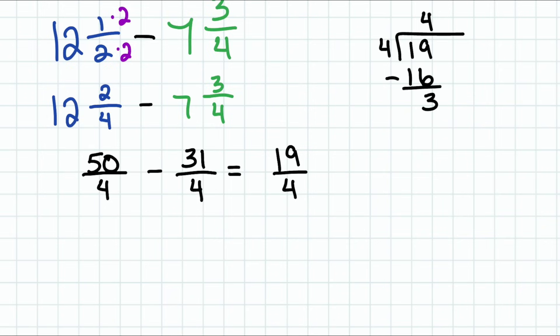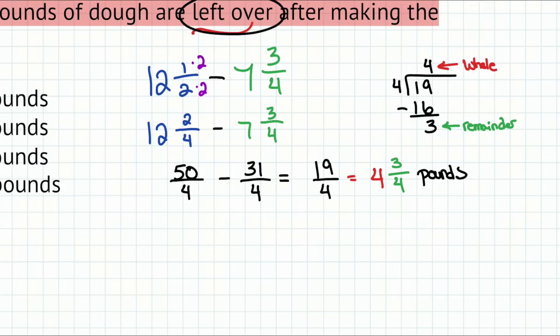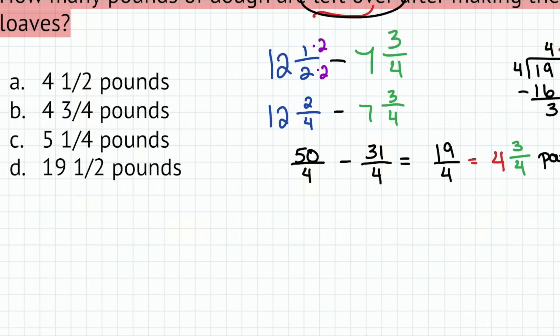So how do we do that? We simply go ahead and see how many wholes we have by dividing the 19 by the four. So four goes into 19 exactly four times. Well, not exactly because we have some leftover. So this right here is going to be the whole, that will be a whole four. And then our remainder right here, that's the three. So three right there over four. Four and three quarters of a pound.